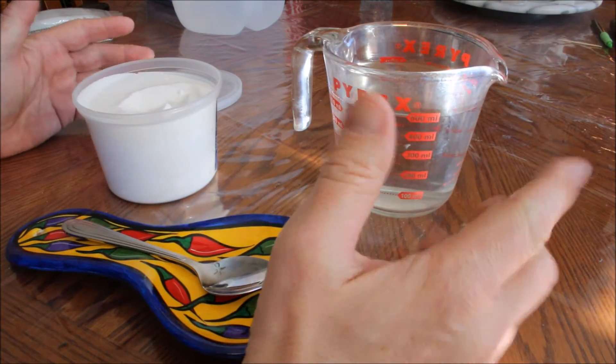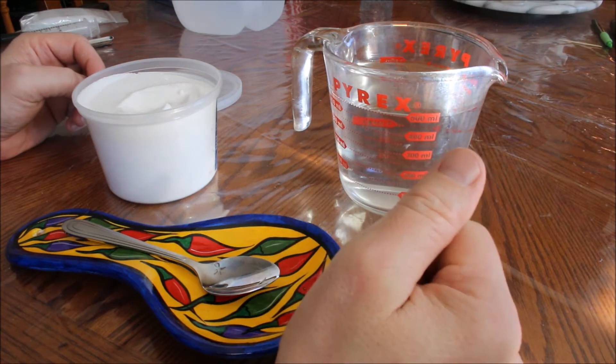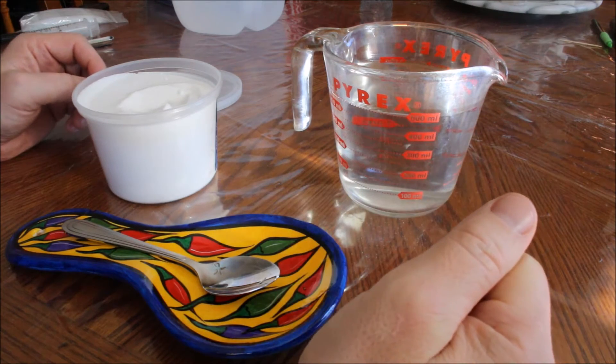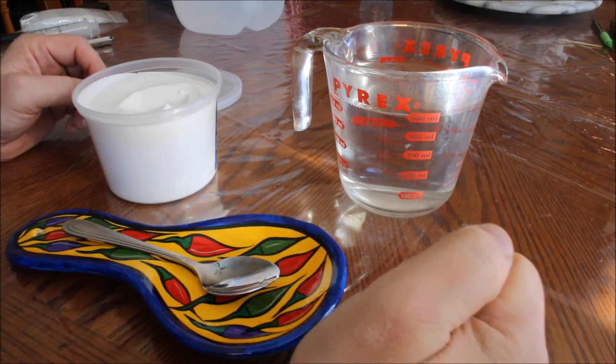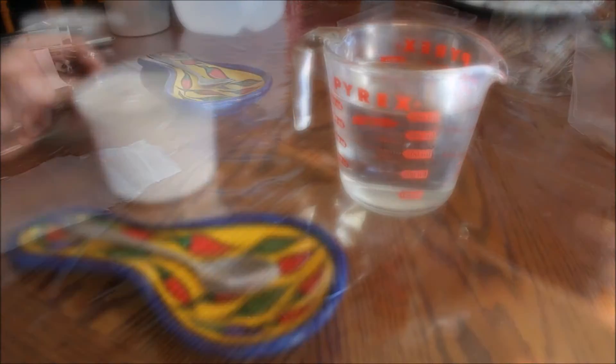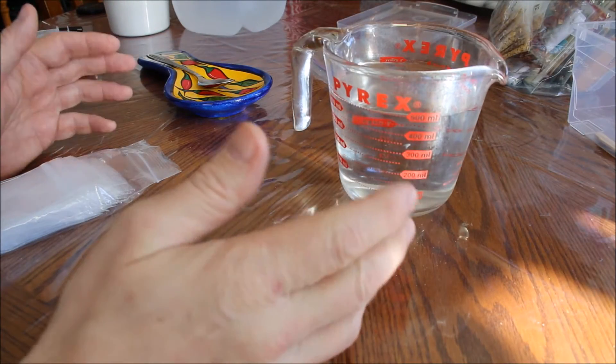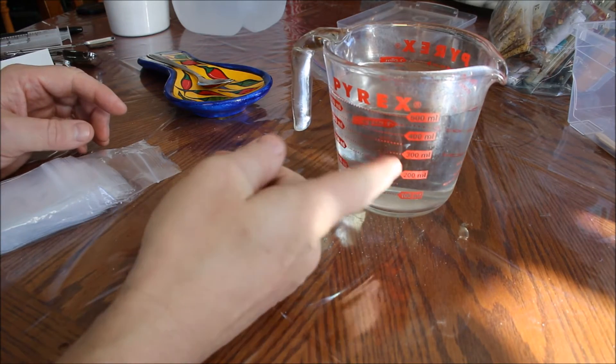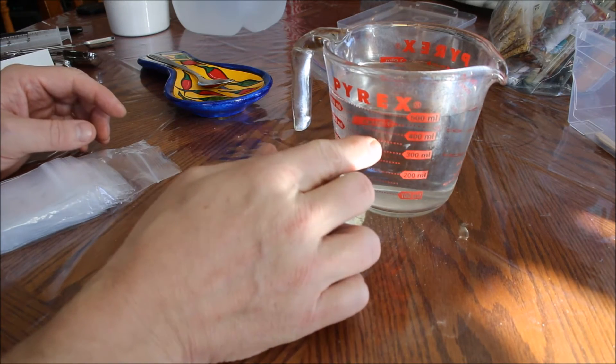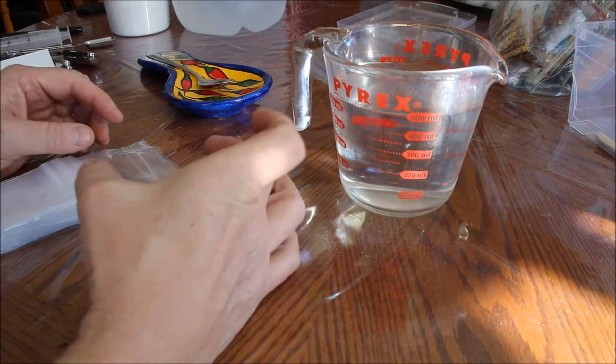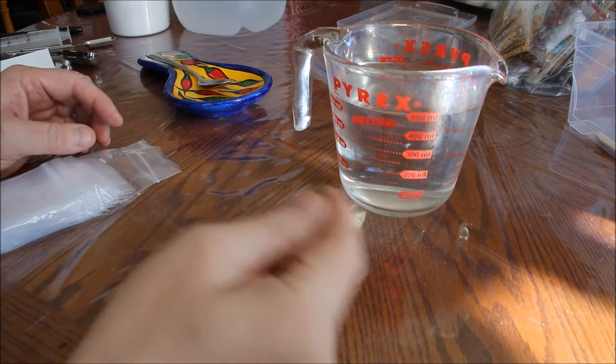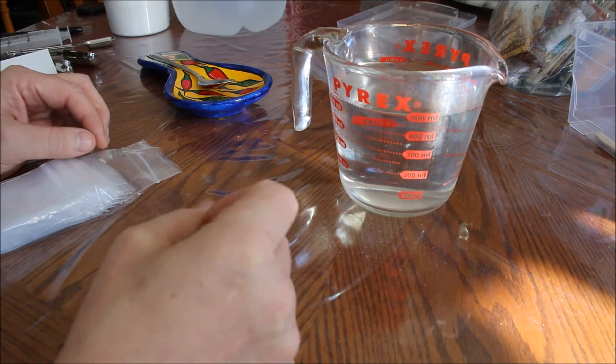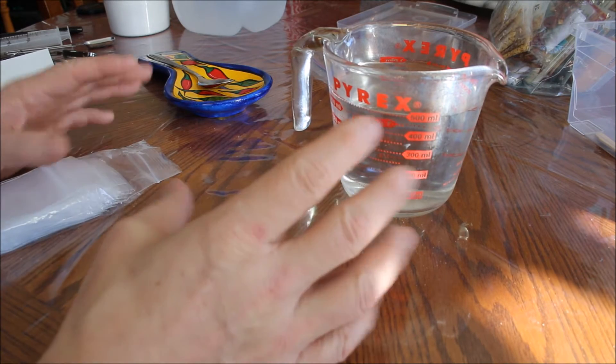So now that this solution has sat for a little while, it is at room temperature. Now I'm going to be adding my seeds to the solution. Previous times that I've done this I was placing the KNO3, which is potassium nitrate, into cups and then separating my seeds into those cups and keeping them labeled.